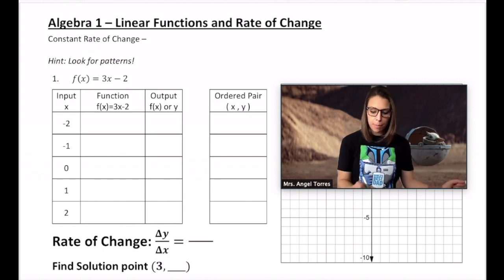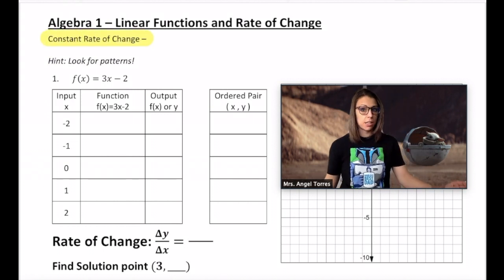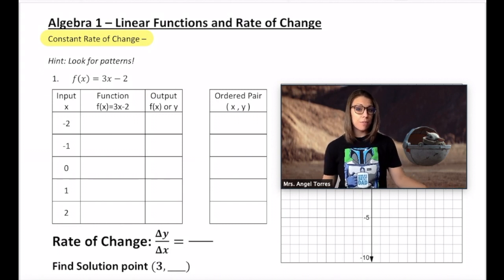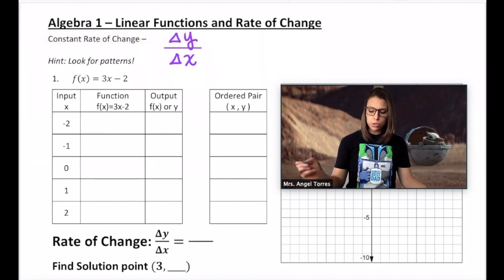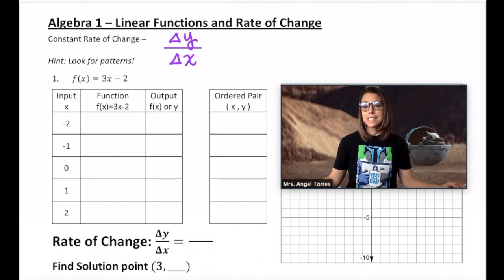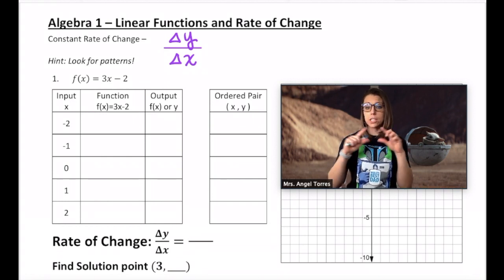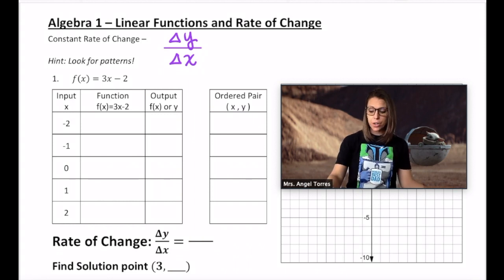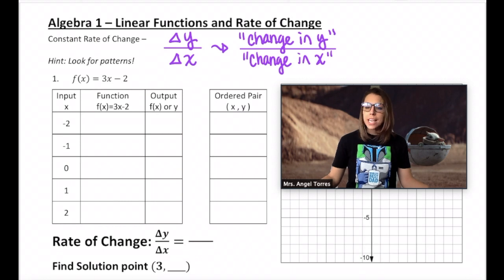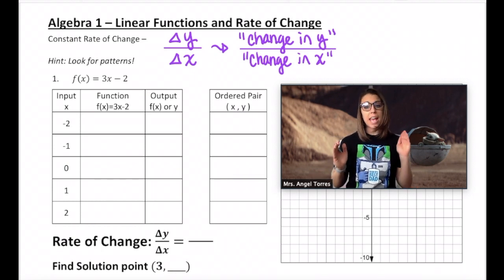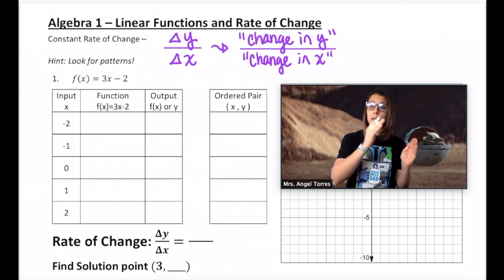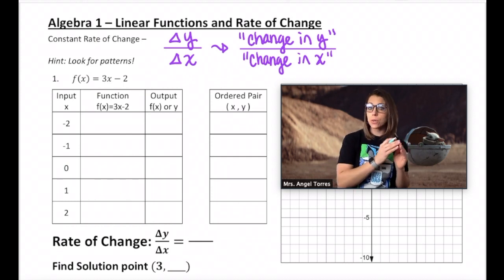A lot of math is just noticing that a pattern occurs and then using that pattern to make our lives easier down the road. So right now we're given a function, f(x) = 3x - 2. The only way we know how to find solutions to this function is to fill out a table. Later on, we're going to use this pattern to expedite that process, make our math a little bit quicker. So before we can do that, we first have to talk about the constant rate of change. Delta y over delta x.